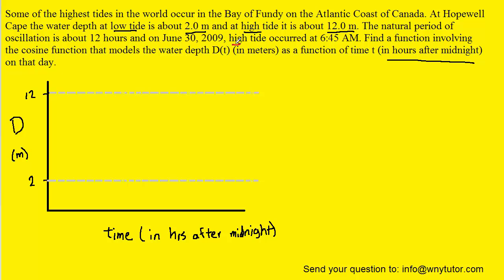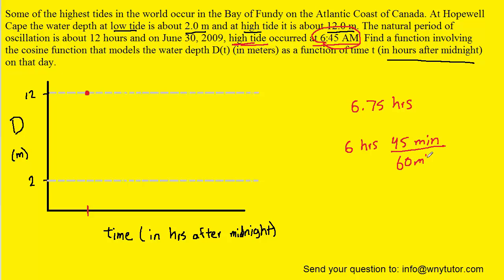The question notes that the high tide occurred at 6:45 a.m. So at a time of 6:45 a.m. we make a point at the highest tide. We recall that we're measuring time in hours after midnight. A time of 6:45 a.m. would be 6.75 hours after midnight — the .75 comes from dividing 45 minutes by 60 minutes per hour. So at a time of 6.75, marked on our time axis, the tide will be at its highest position.